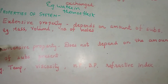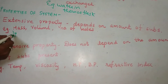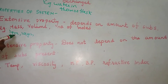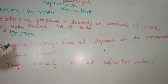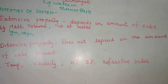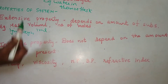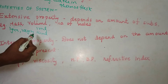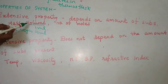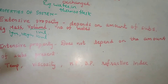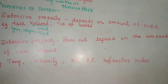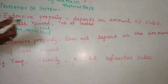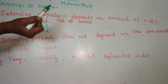For example, if in a system you have one gram of substance versus 100 grams of substance, the mass changes — the property changes. That is why mass is an extensive property. Similarly, if volume changes from 1 ml to 10 ml, the property varies. Number of moles — if you increase the moles, the property changes. Such properties that depend on the amount of substance are called extensive properties.